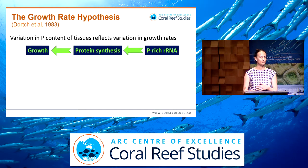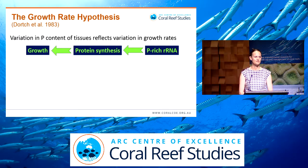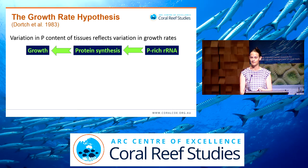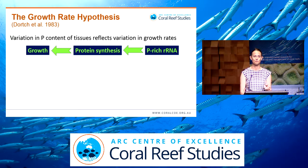This principle underlies something called the growth rate hypothesis, which is a leading hypothesis in the field of ecological stoichiometry. This hypothesis seeks to explain variation in phosphorus content in the tissues of organisms in relation to their growth rates. It's based on the notion that growth requires protein synthesis, protein synthesis requires ribosomal RNA, and ribosomal RNA is quite rich in phosphorus. So we'd expect that fast-growing organisms would have high RNA to DNA ratios in their tissues, and that's underlying the variation in phosphorus.